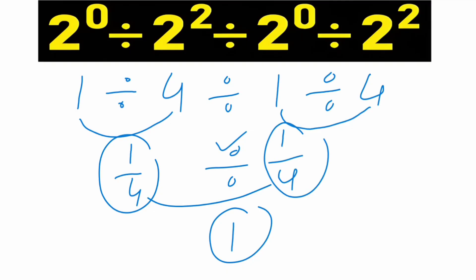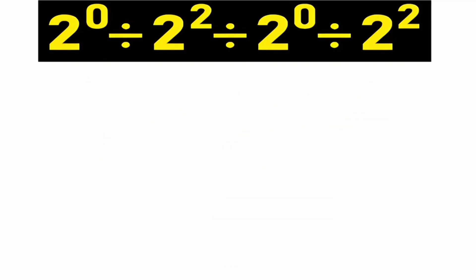The other method is 2 power 0 is equal to 1, divide 2 power 2 is equal to 4, divide 2 power 0 is equal to 1, divide 2 power 2 is equal to 4.